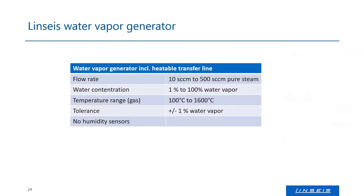The flow rates used with the water vapor generator are smaller compared to the relative humidity generator — between 10 to 500 milliliters per minute. The water concentration can be up to 100% and down to 1%. The temperature range is between 100 and 1600°C, and the accuracy is ±1% for the water vapor concentration.